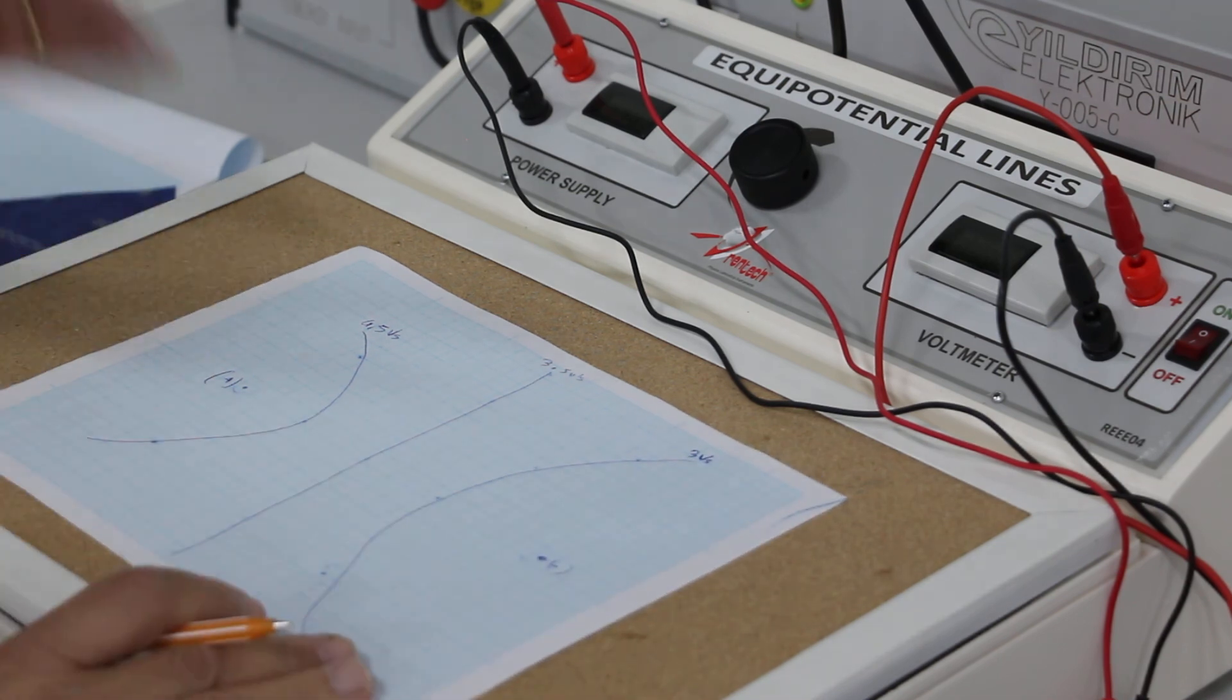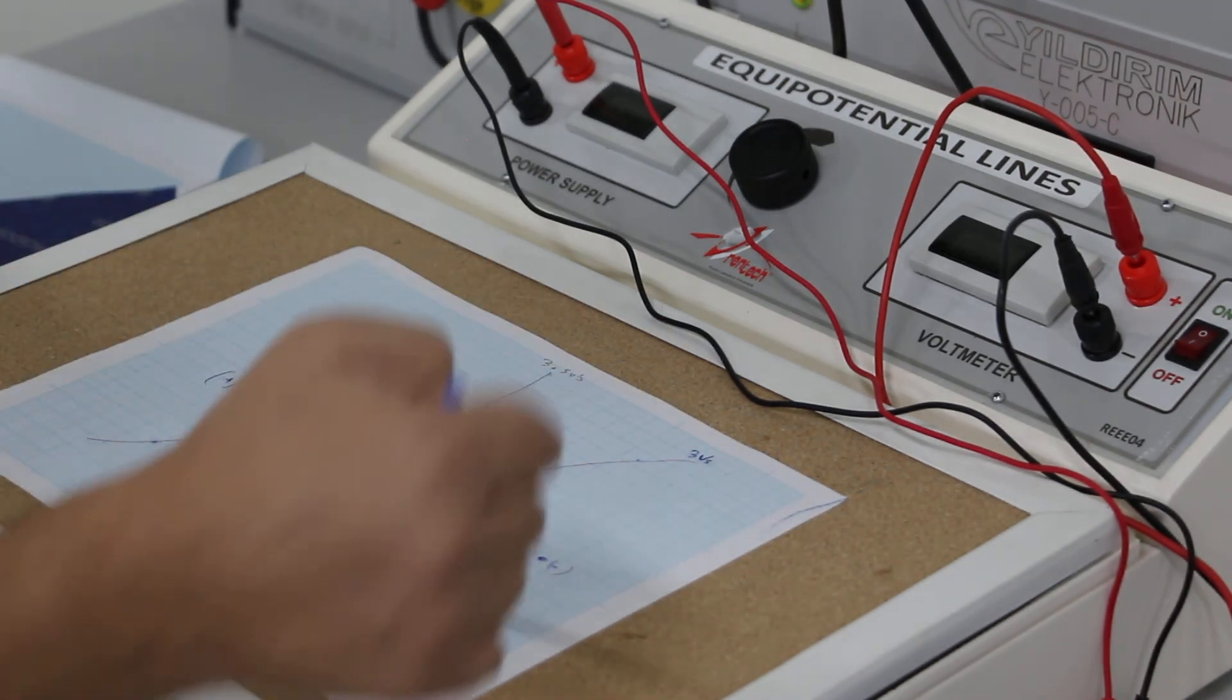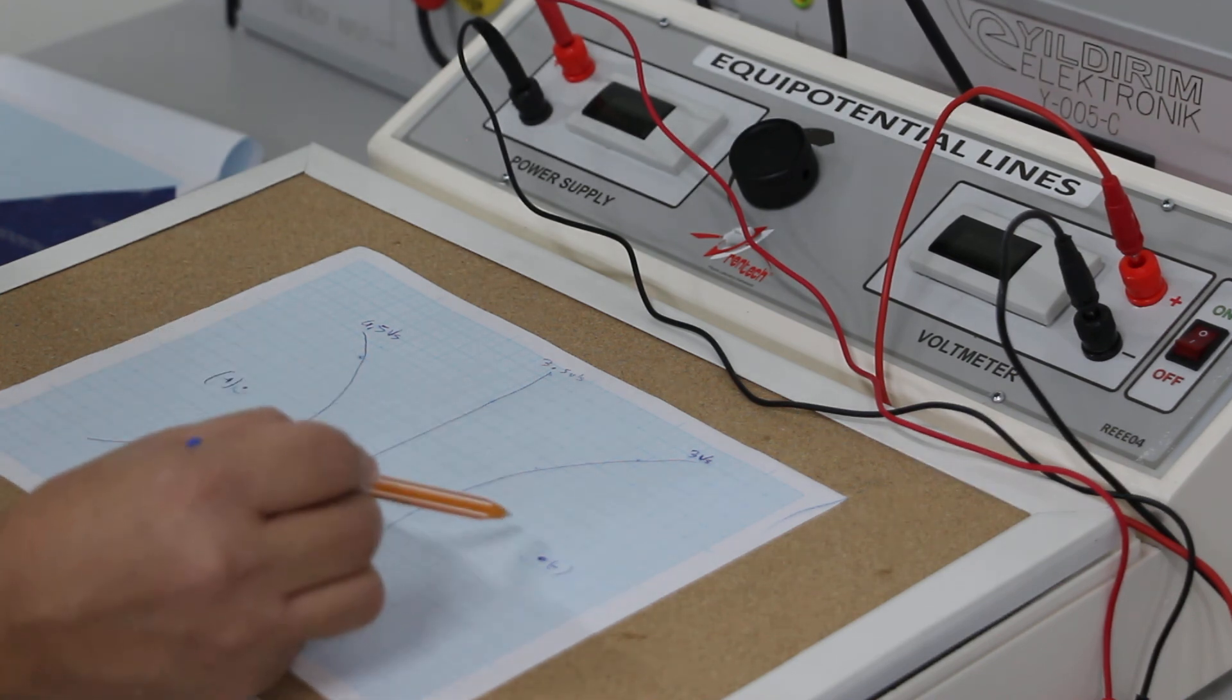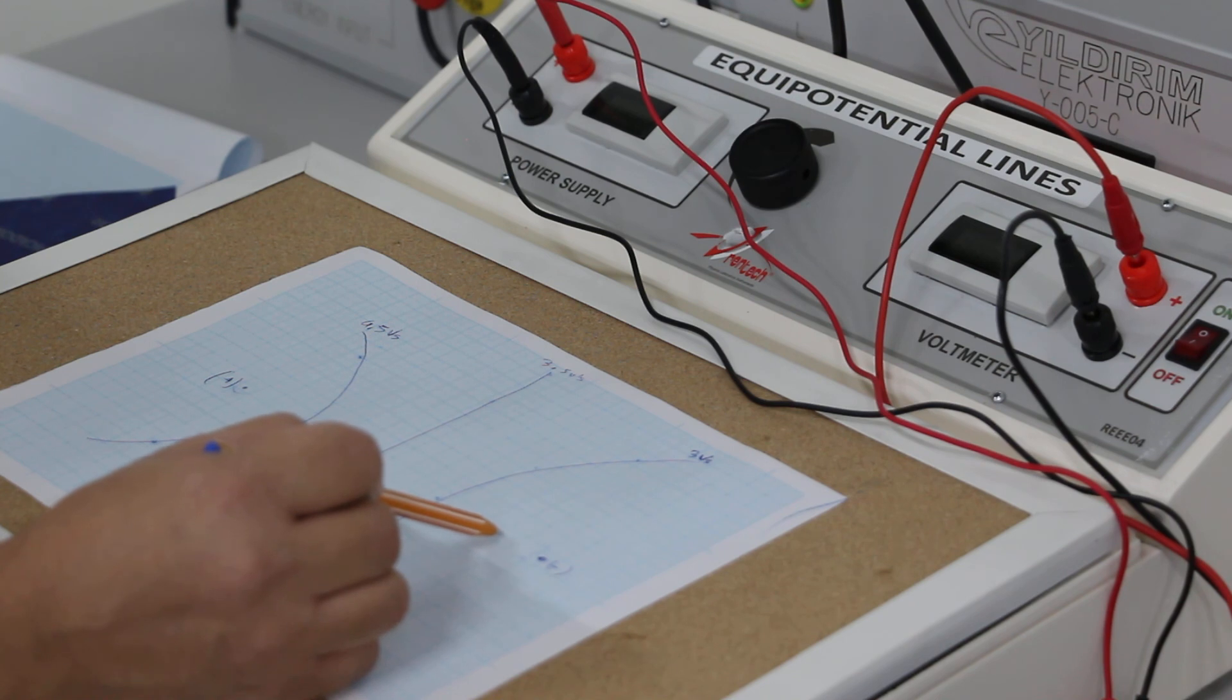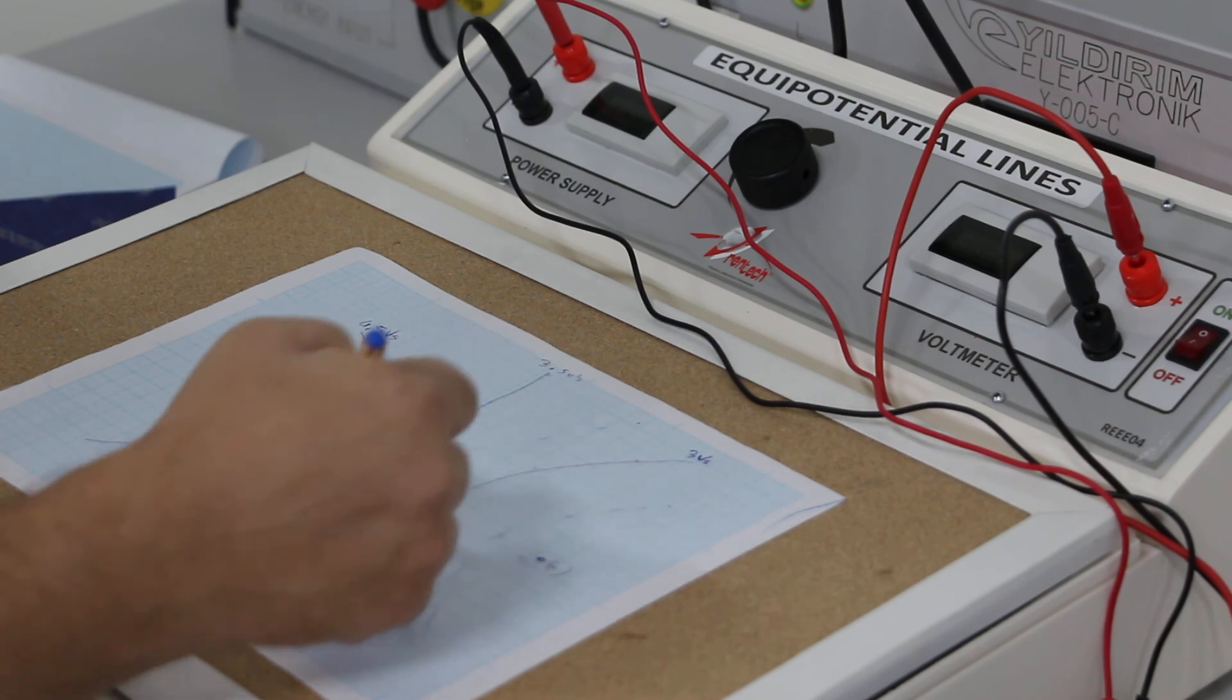Yes, here our purpose was to see those equal potential lines. If we change the voltage difference points from here, we can get much more lines like that.